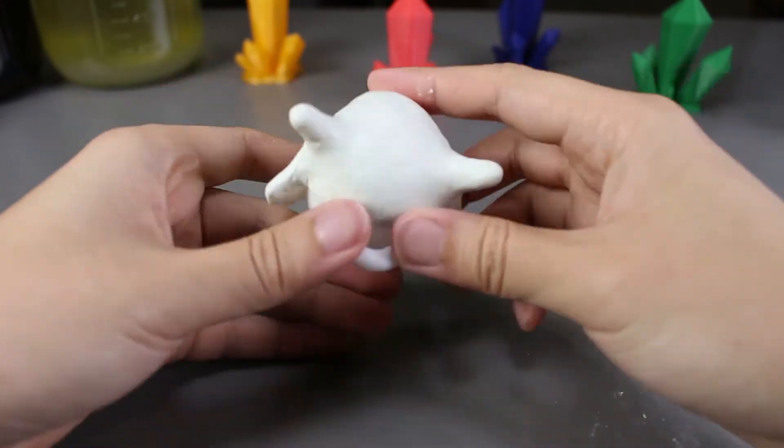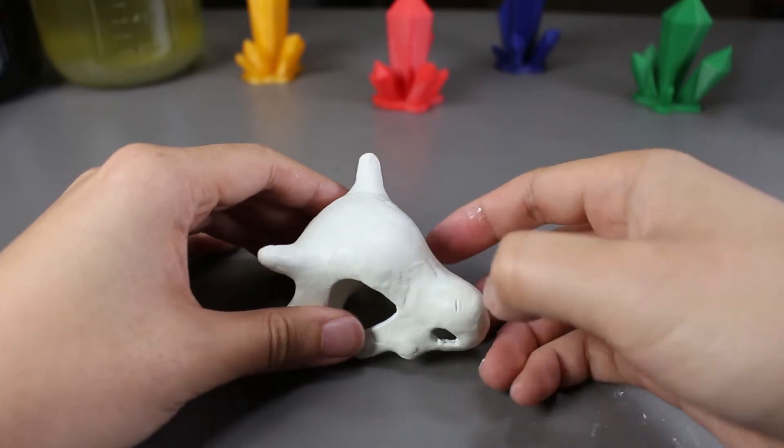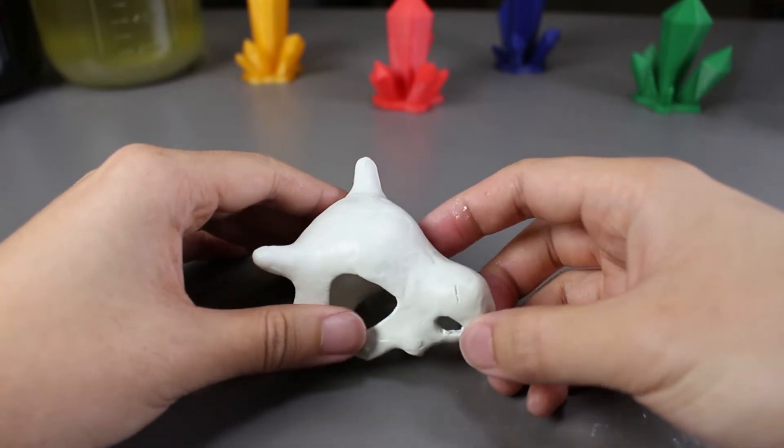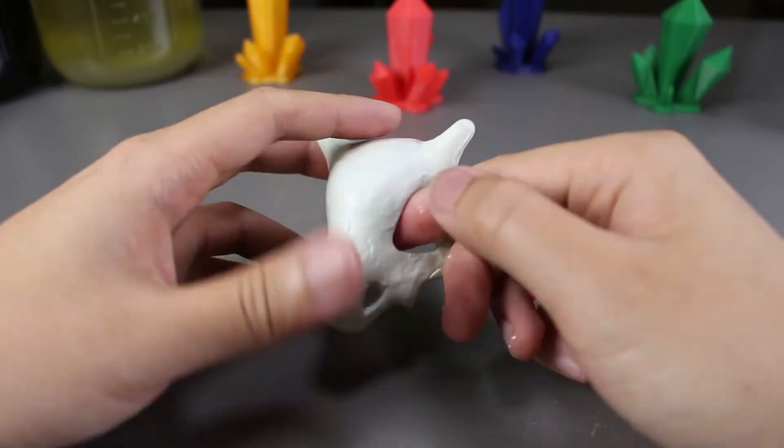What I love about this epoxy putty is after you are done, you can use your nails or any type of tools to add some last minute details to your model. Here I'm going to add some scratches and a scar onto my model.